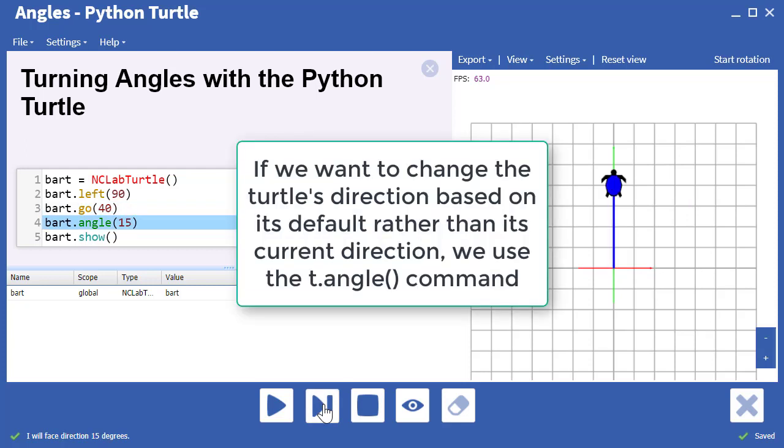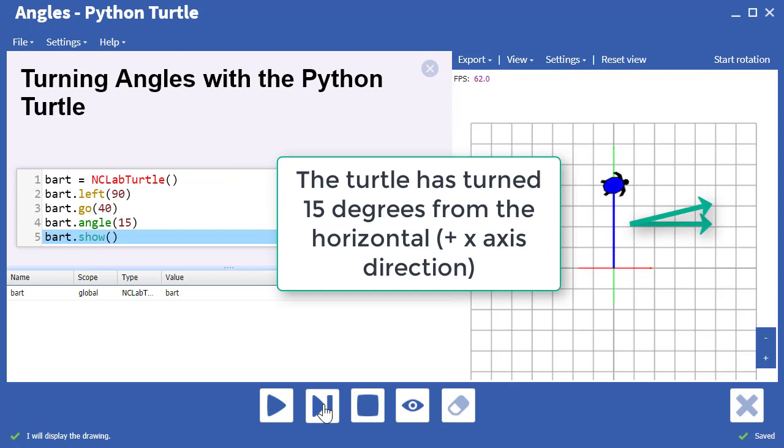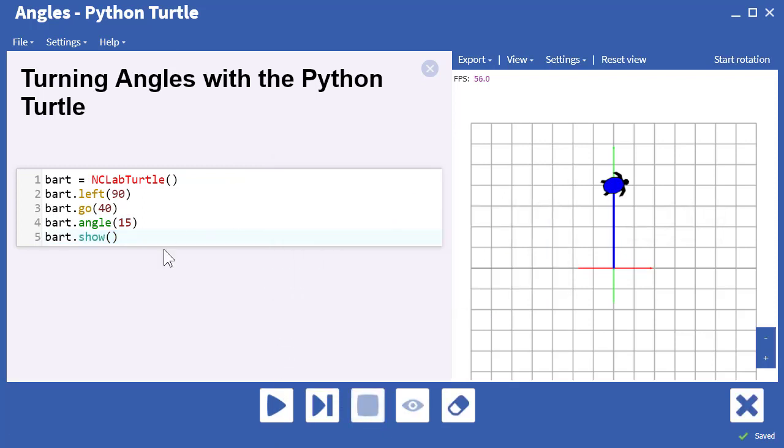Next, we'll turn the turtle using angle from zero, which is facing east parallel to the x-axis, and we've turned it 15 degrees counter-clockwise.